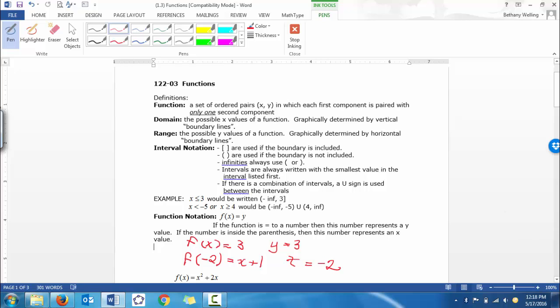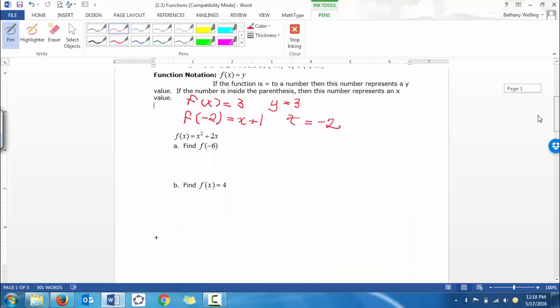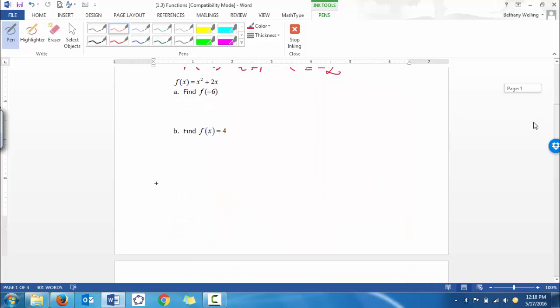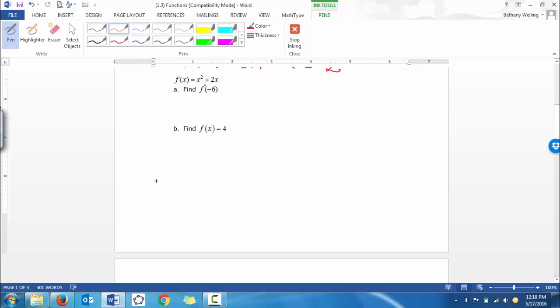Let's try one. This might be new for some of you, so let's try it. So we have this function f(x) is equal to x squared plus 2x. And we see the first one says f of negative 6.